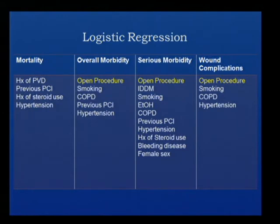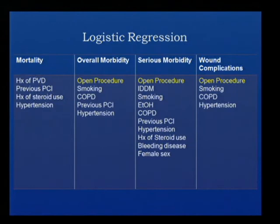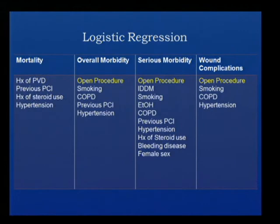Other preoperative factors leading to overall morbidity included smoking, COPD, previous coronary intervention, and hypertension. Factors leading to serious morbidity were insulin-dependent diabetes, smoking, alcohol, COPD, history of previous coronary intervention, hypertension, steroid use, bleeding disease, and female sex. For wound complications, the significant additional factors beyond procedure type were history of smoking, COPD, and hypertension.